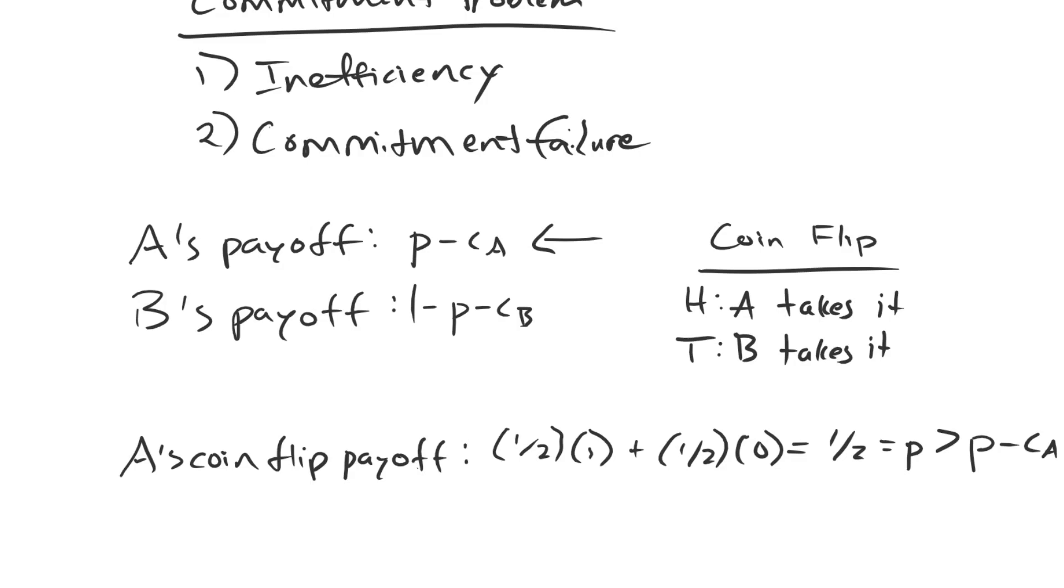We think about B's payoff. Well, it's going to be the same sort of idea. B's payoff for this coin flip is going to be, well, now this half of the time B is losing on heads, so it's getting nothing. The other half of the time B is winning on tails, and so its payoff is equal to one-half, which is equal to one minus P, which is greater than its war payoff of one minus P minus CB.